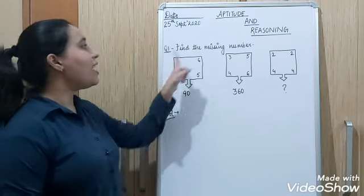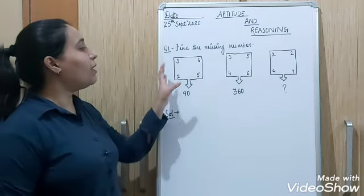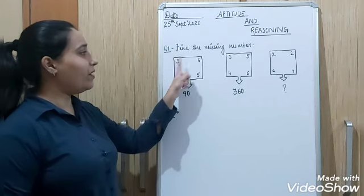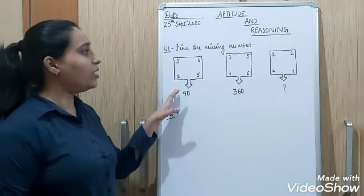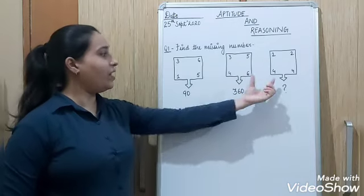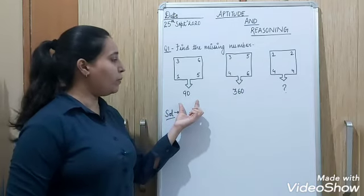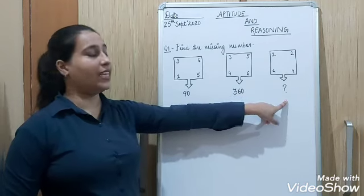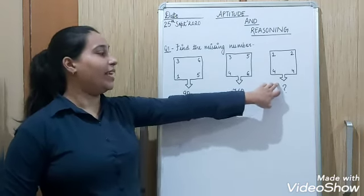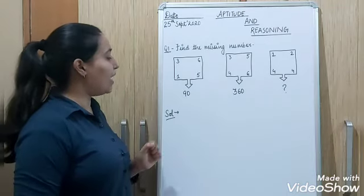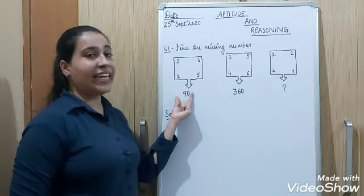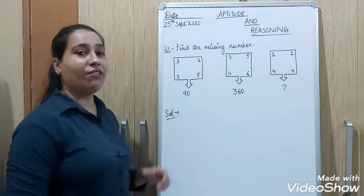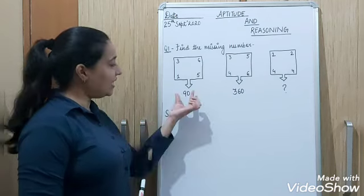So the first question which we will do is find the missing number. Here you can see boxes in which numbers are written at the corners. And here there are arrows given and below you have some numbers mentioned. So here is a question mark, so that is why we have to find the value here.